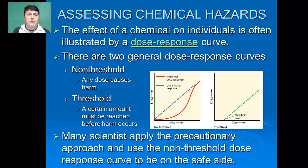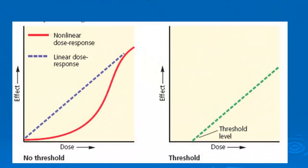The effect of chemicals on individuals is often illustrated by a dose-response curve. There are two general dose-response curves. The first is called a non-threshold dose-response curve, illustrating that any dose is going to cause harm, and with increased dose we have increased harm. The other is called a threshold dose-response curve, in which we don't see an effect until we reach a particular threshold, and then we begin to see harm.